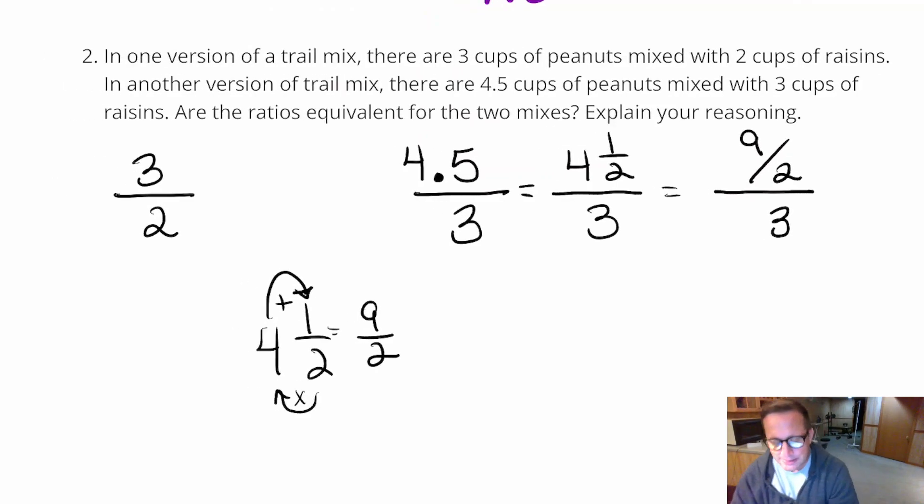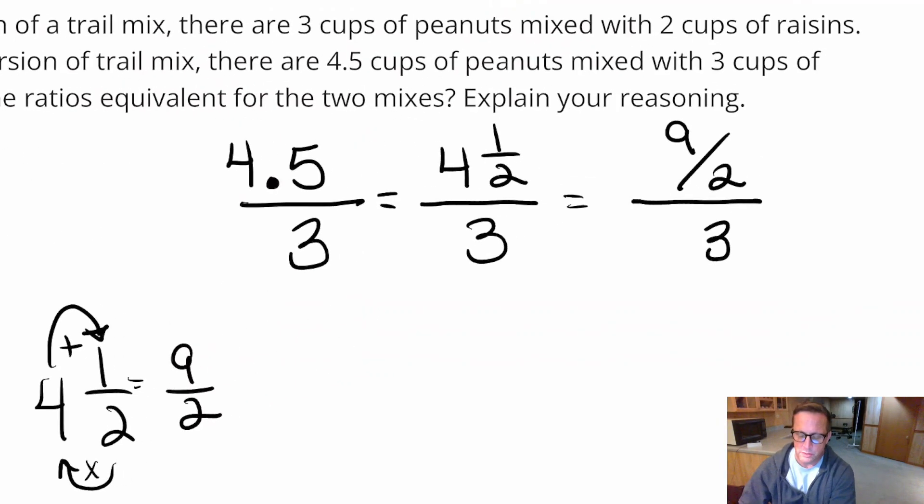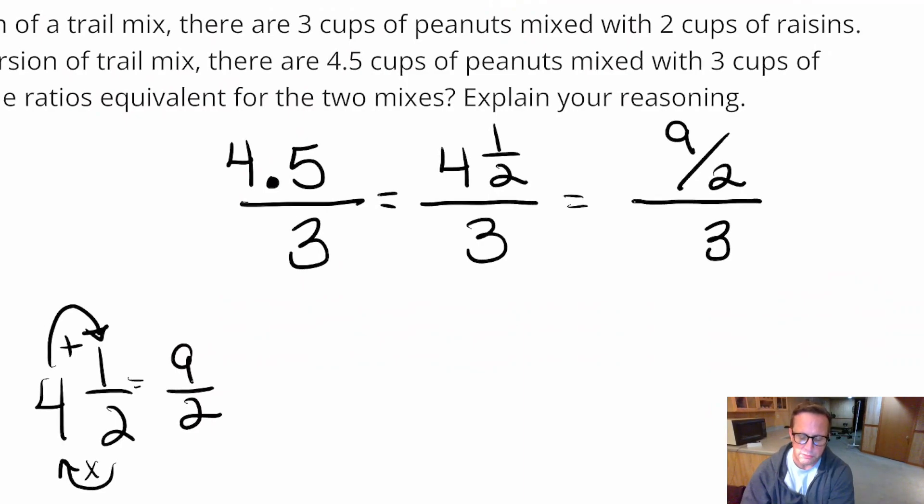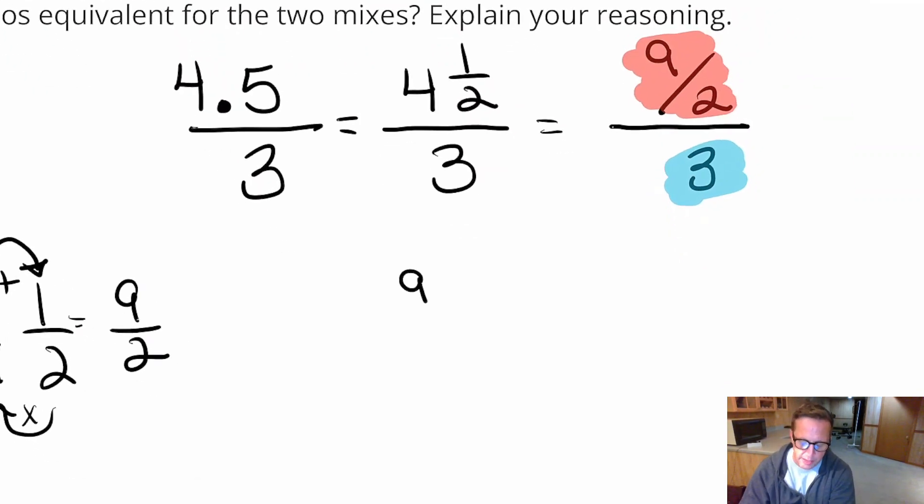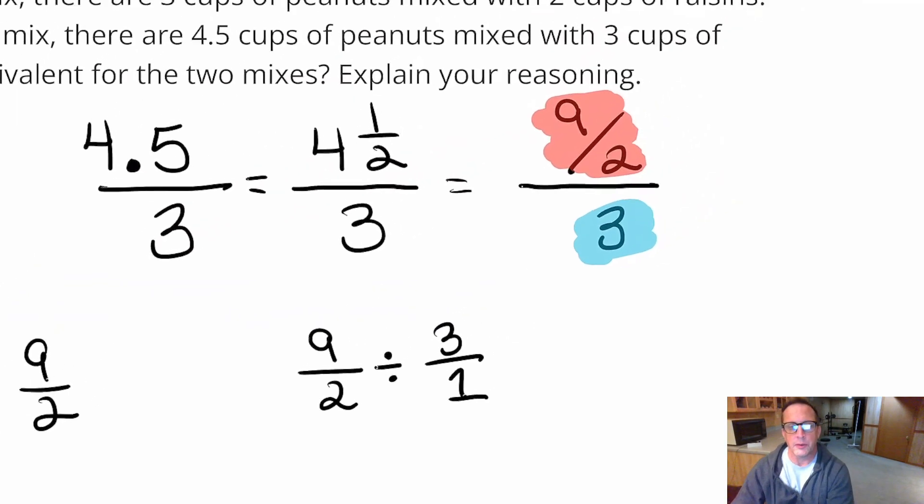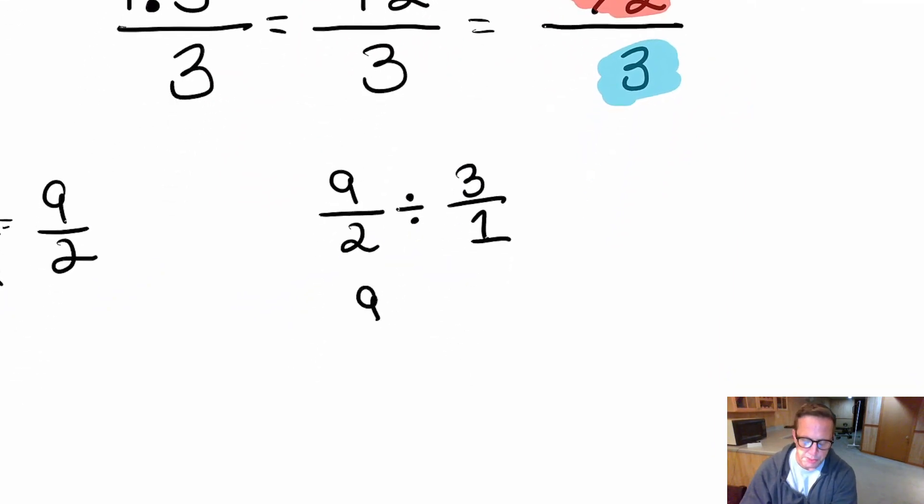All right, again, that does not look like three over two, right? But we're not done with it. It's still in complex form. So fractions are nothing but division problems, right? Top number divided by the bottom number. Numerator divided by the denominator. Top divided by the bottom. So let's see what happens when we do nine halves divided by three. I'm going to write three over one. So nine halves divided by three. So I'm going to do the keep change flip-a-rooney here.